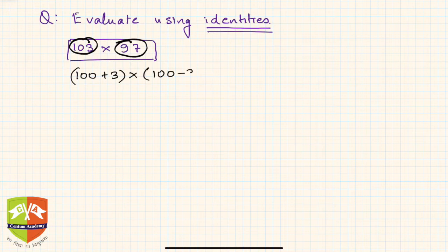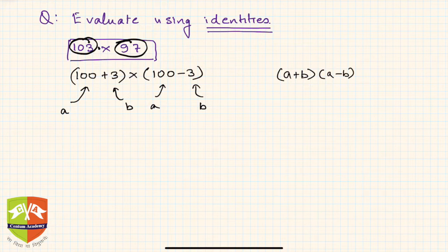Beautiful! If you see 100+3 and 100-3, if you look closely it's like this is a and this is b. If you remember, (a+b) times (a-b) was given as a²-b². This was one of the algebraic identities we discussed before.